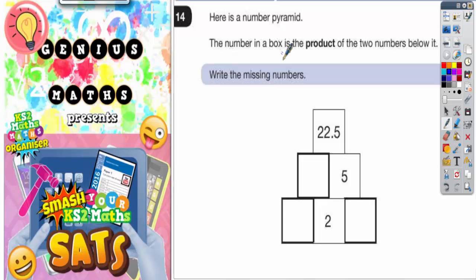Question 14. Here is a number pyramid. The number in a box is the product of the two numbers below it. Write the missing numbers.